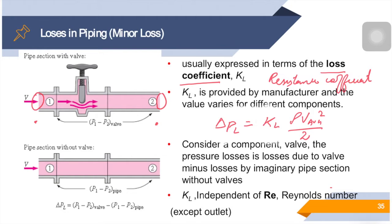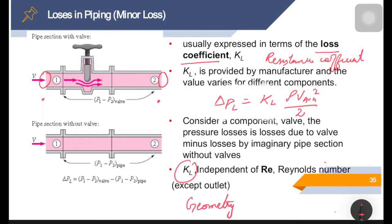So the pressure loss delta PL equals KL times rho V-average squared over 2. We need to note that KL is independent of Reynolds number, though in general the loss coefficient depends on geometry. A sharp bend will have a higher loss coefficient than a smooth elbow. While KL does depend on both geometry and Reynolds number, it is usually assumed to be independent of Reynolds number, which is a reasonable approximation since most flows occur at very large Reynolds numbers.